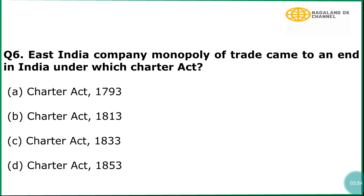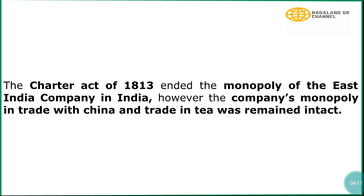Question number 6: East India Company monopoly of trade came to an end in India under which Charter Act? In explanation, the Charter Act of 1813 ended the monopoly of the East India Company in India. However, the company's monopoly in trade with China and trade in tea remained intact.